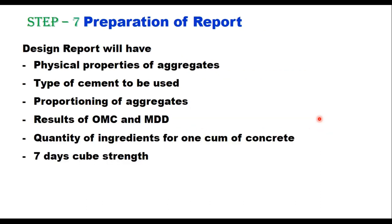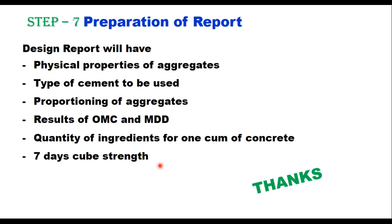The design report will include: physical properties of aggregates; type of cement used (OPC, PPC, or PSC); proportioning of aggregates — amount of cement, coarse aggregate, and fine aggregate; amount of water; results of OMC and MDD in the form of a compaction curve graph; calculation of quantity of ingredients for one cubic meter of concrete; and the average seven-day cube strength value.